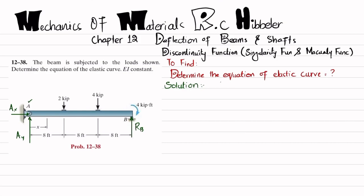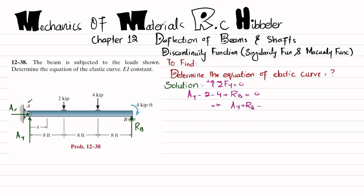We will find these reaction forces using equations of equilibrium. The first equation is that the sum of all forces along the y-direction must equal zero, with upward forces taken as positive. So we write: AY minus 2 minus 4 plus RB equals 0, giving us AY plus RB equals 6. This is equation number 1.